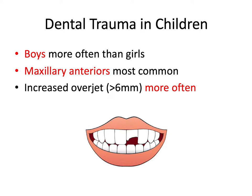Here are some great high-yield facts for the board exam. Boys are more often impacted by dental trauma than girls. The maxillary anterior teeth are the most commonly involved. An increased overjet greater than 6 millimeters specifically has a higher risk of dental trauma, because the upper teeth are out in front of the lower teeth, making them more vulnerable and more likely to be knocked into.